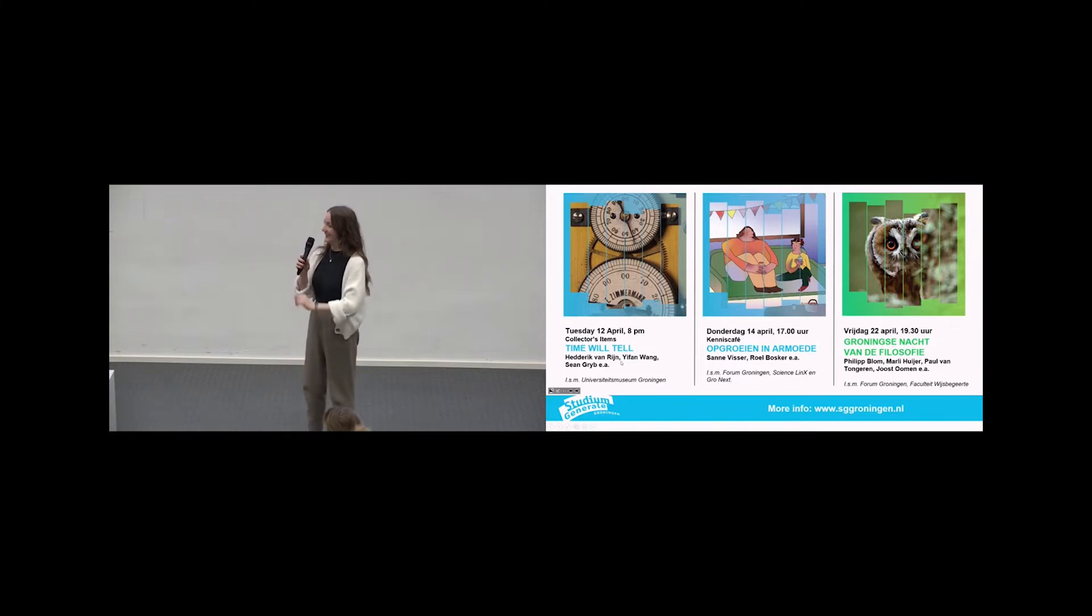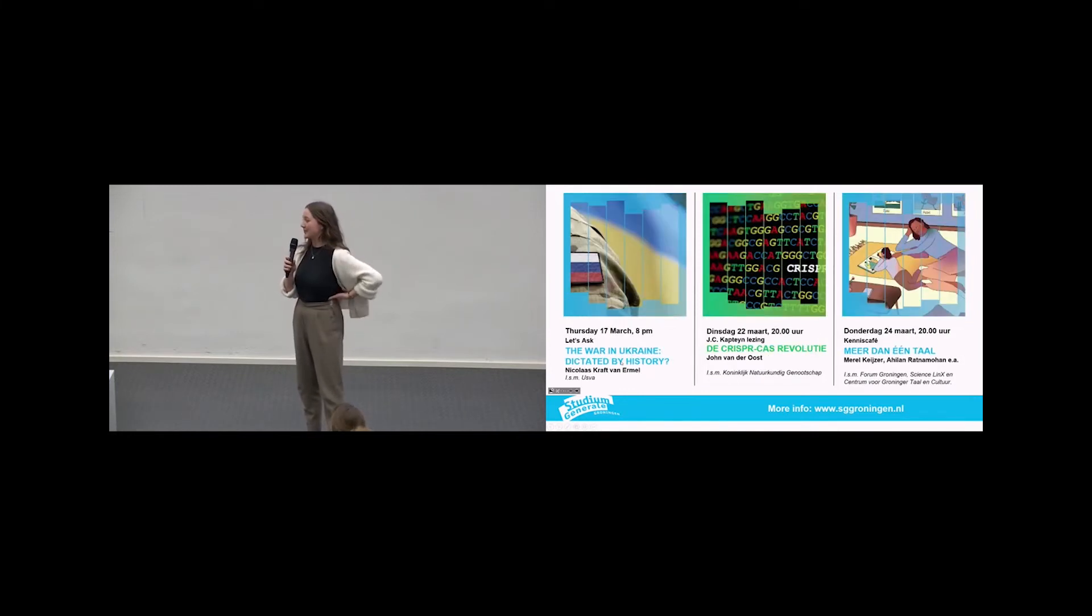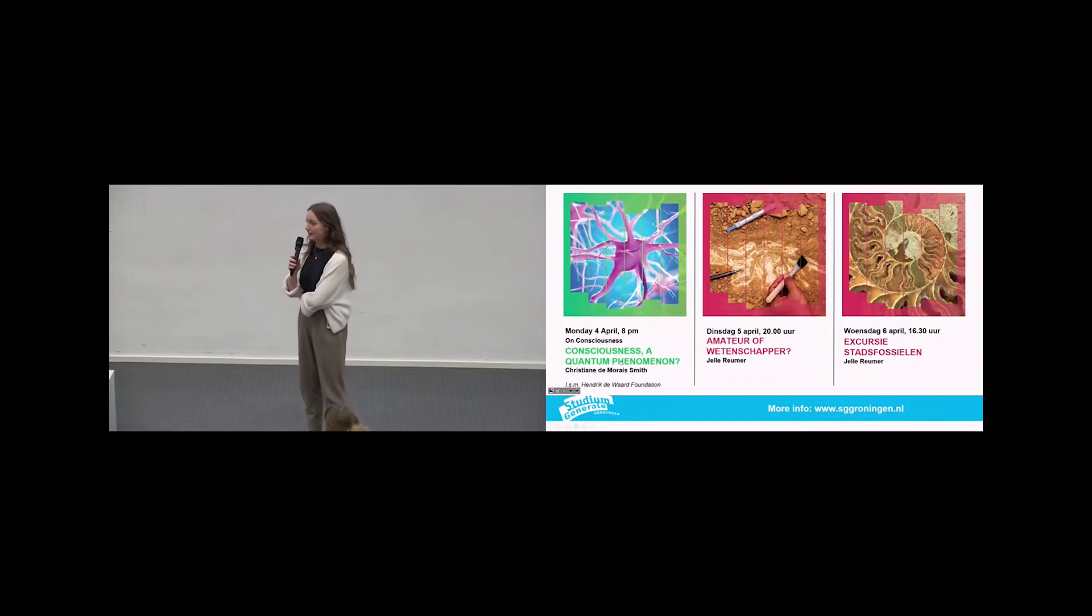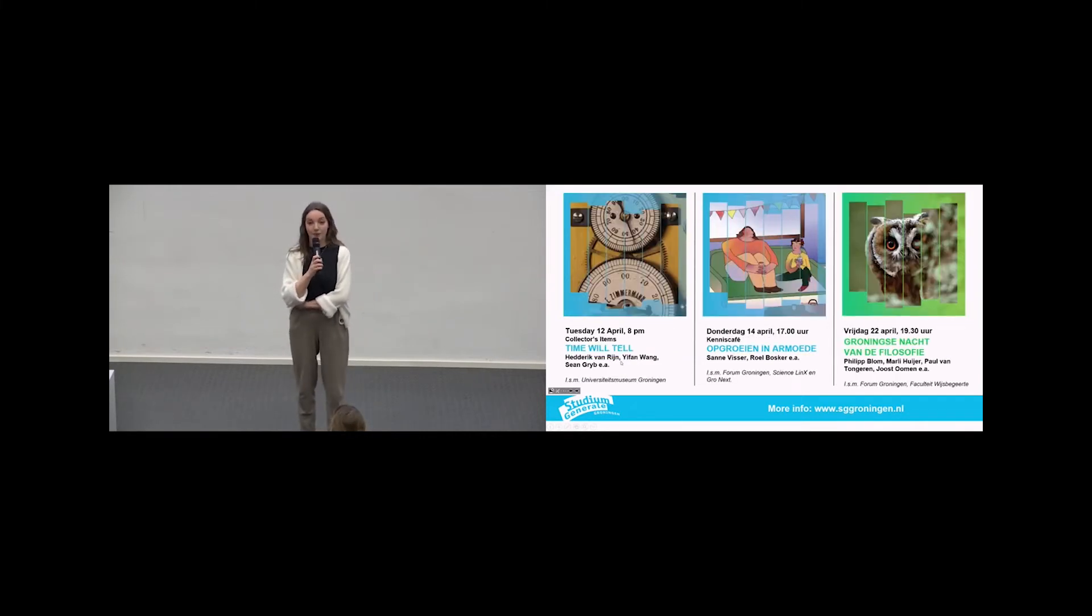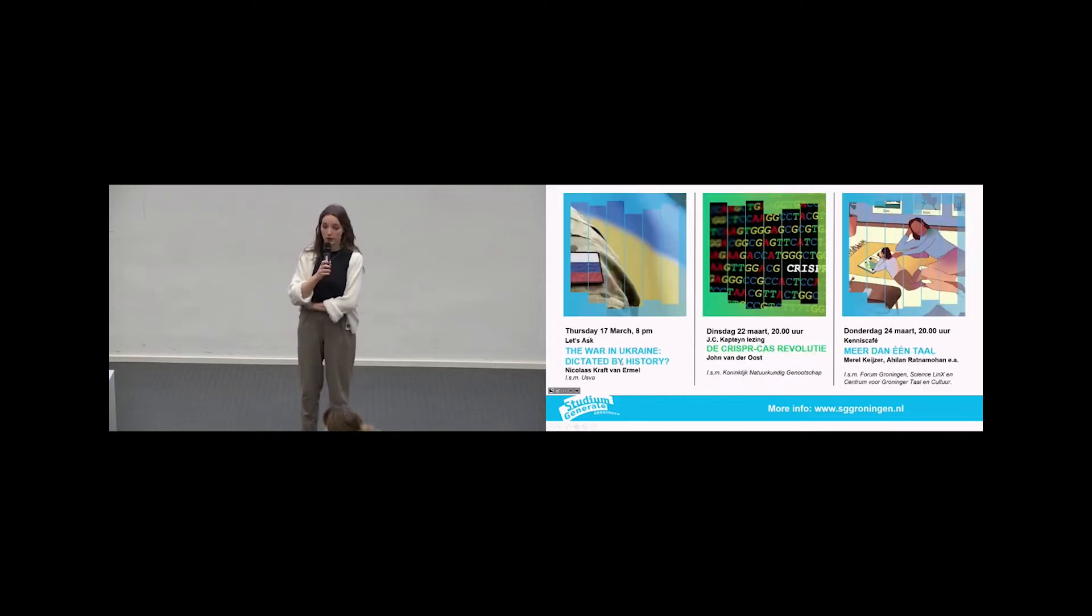In tonight's edition we welcome Nikolaas Kravt van Ermel and we'll be talking about the different historical narratives that Russia and Ukraine have been presenting, the incongruences between them. Everyone who's been watching the news has noticed that the stories are very different. Nikolaas is a historian for the University of Groningen and also affiliated with the Netherlands Russia Center which promotes cultural exchange, business exchange, government institutions between the countries.